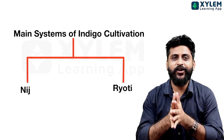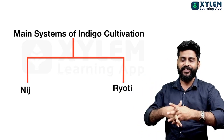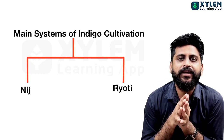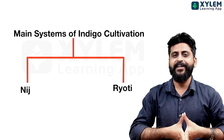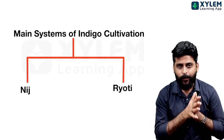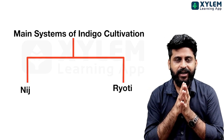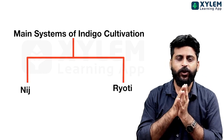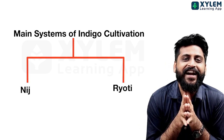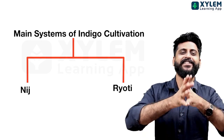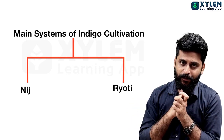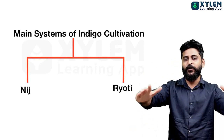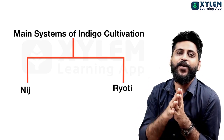So the two types of Indigo Cultivation are Nij and Raiyati. All right, please subscribe and follow us. Thanks to all, bye!